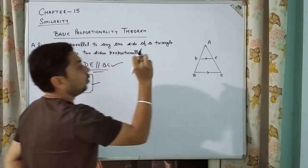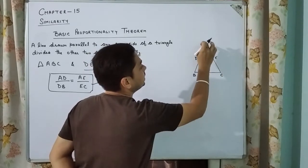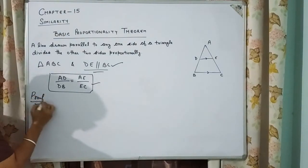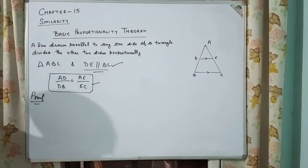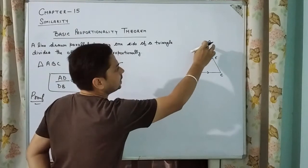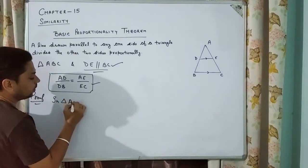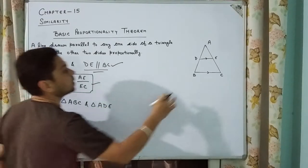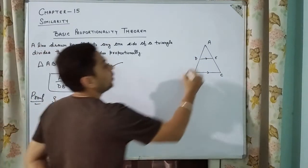Now let's look at the proof of this theorem. We compare triangle ABC and triangle ADE. Given: triangle ABC with DE parallel to BC. We have to prove that AD upon DB equals AE upon EC. In this figure we have two triangles: one larger triangle ABC and a smaller triangle ADE.